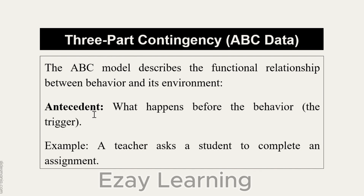Antecedent is basically something which is happening before. By antecedent we mean before, and by consequence we mean something that is happening after. So antecedent is what happens before the behavior — it might be the trigger as well. For example, a teacher asks a student to complete an assignment. This is something happening before a particular behavior.